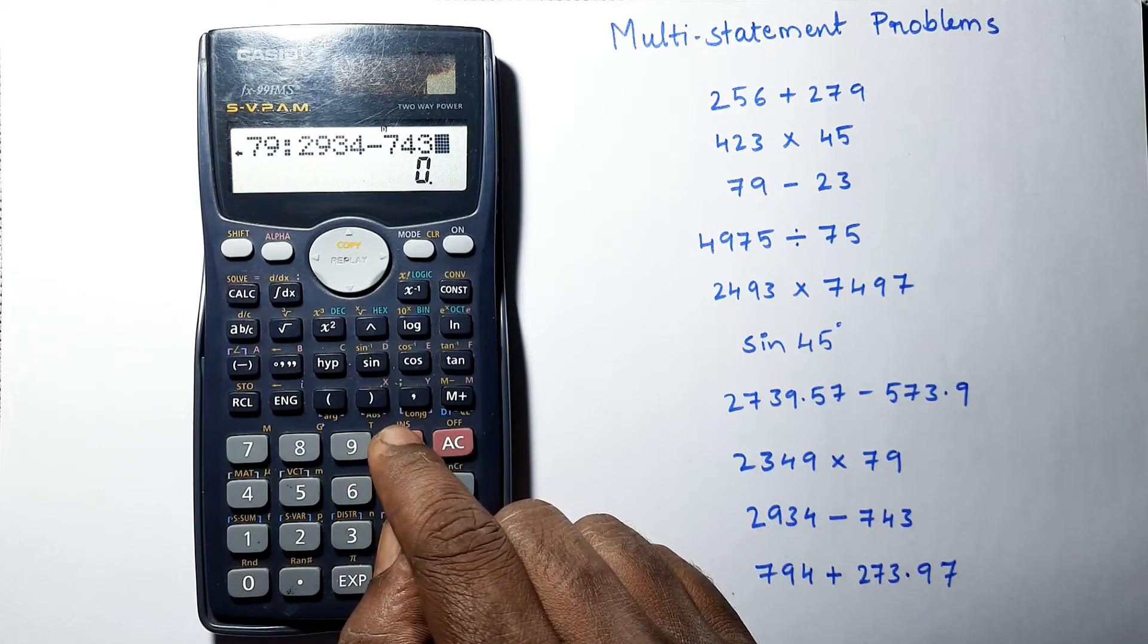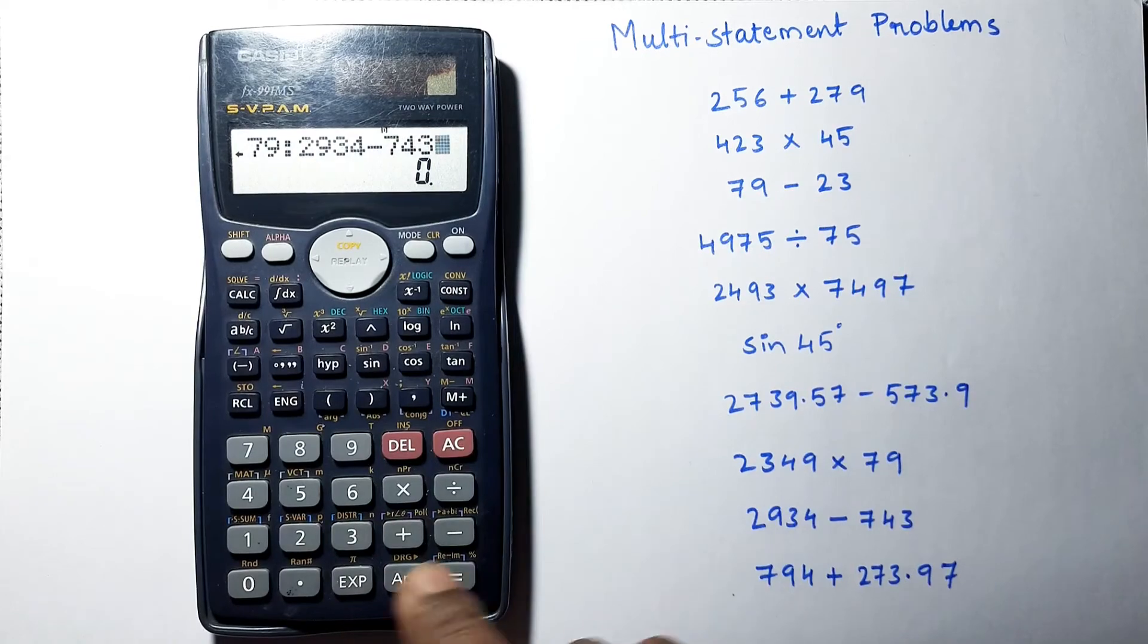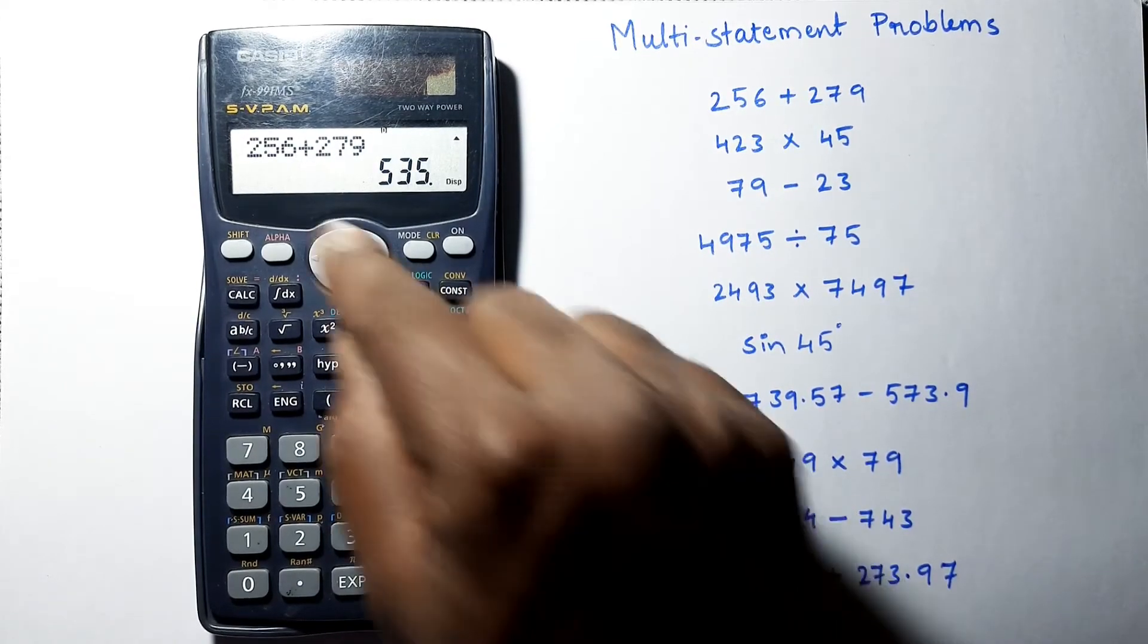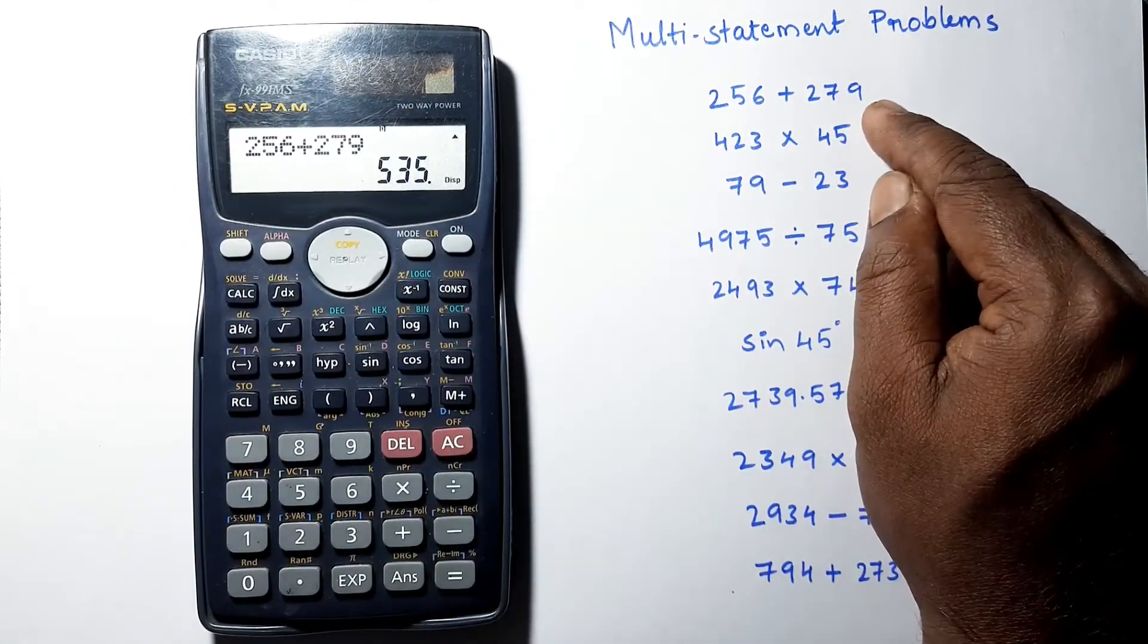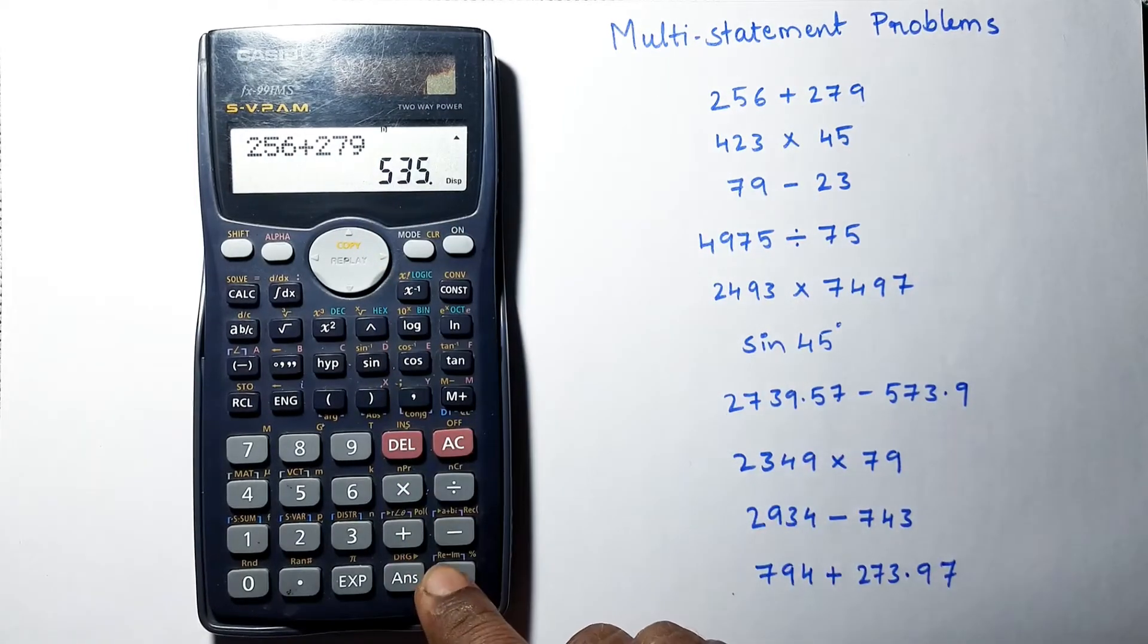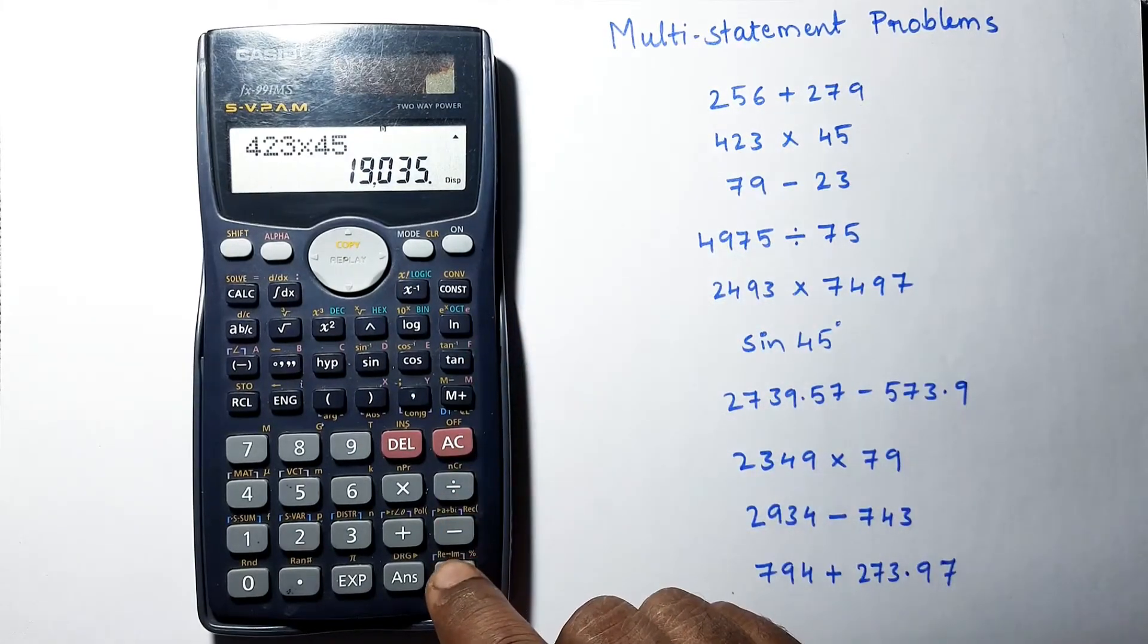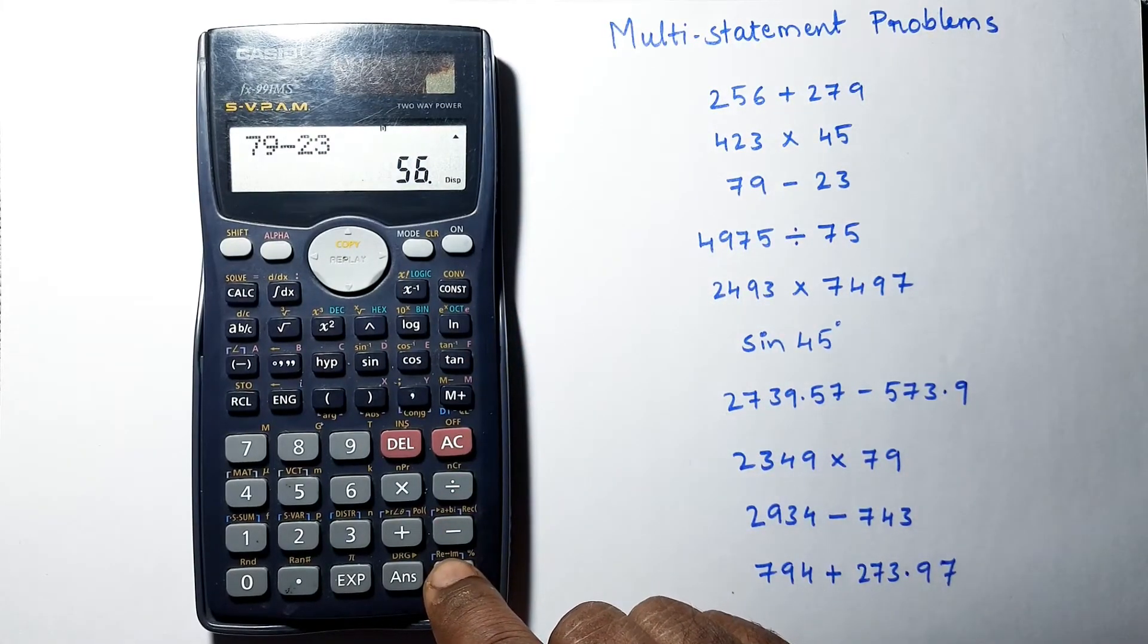Press equal. Now you can see it is displaying the first problem, the answer is 535. If you press equal again, it will display the next answer. If you keep on pressing equals...